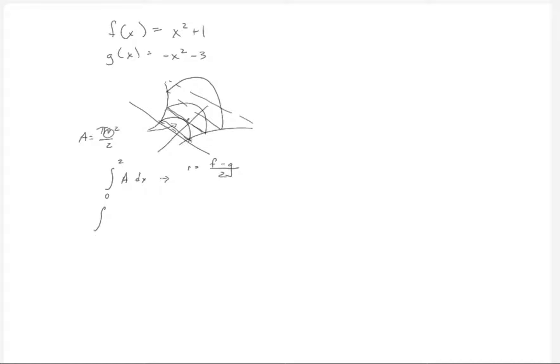And putting it all together I'll have the integral from 0 to 2 of pi times r squared, so f minus g over 2, dx. And now I just have to substitute in my functions, evaluate this, and actually this is pi r squared over 2, but that's our definite integral that I'll check out on the computer.